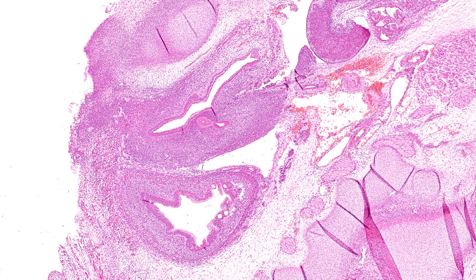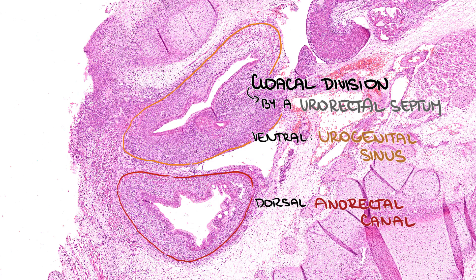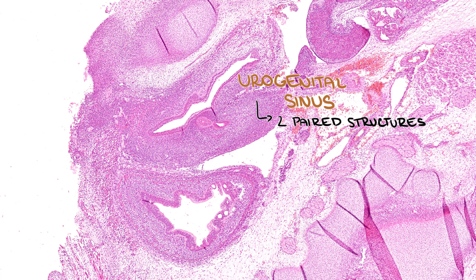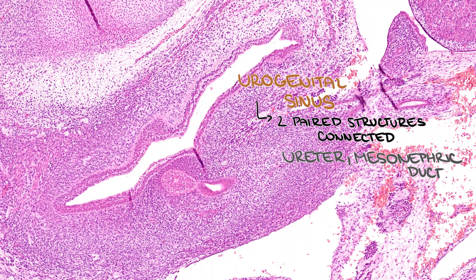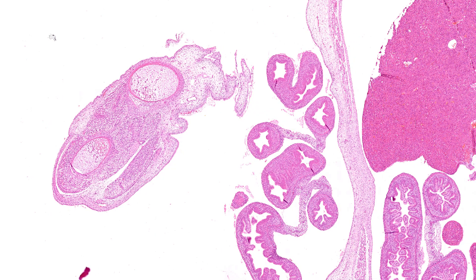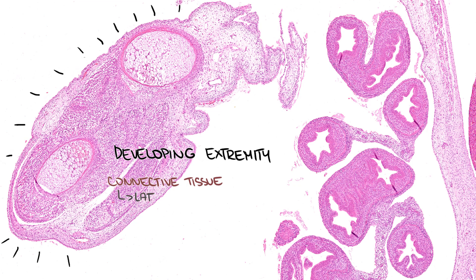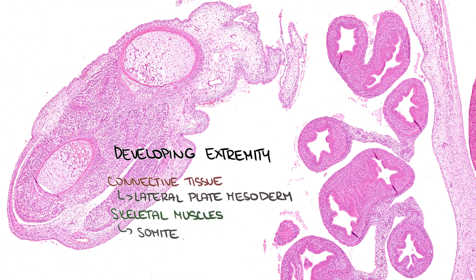Moving to the pelvic region, there are two separate cavities which were formed in the process of cloacal division by the urorectal septum. The ventral cavity is called the urogenital sinus, while the dorsal cavity is termed the anorectal canal. Urogenital sinus gives rise to the urinary bladder and urethra. Two paired structures are connected to the urogenital sinus on both sides: the ureter and mesonephric duct. There is one more structure which we can see in the section near the physiological umbilical hernia — a developing extremity. Connective tissue is developed from lateral plate mesoderm and skeletal muscles, as all skeletal muscles of the fetus are derived from the somites, from the paraxial mesoderm.